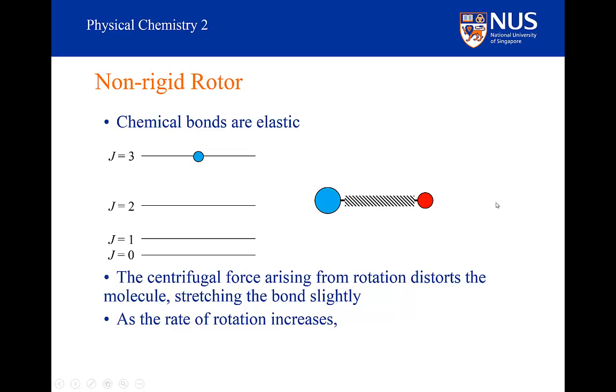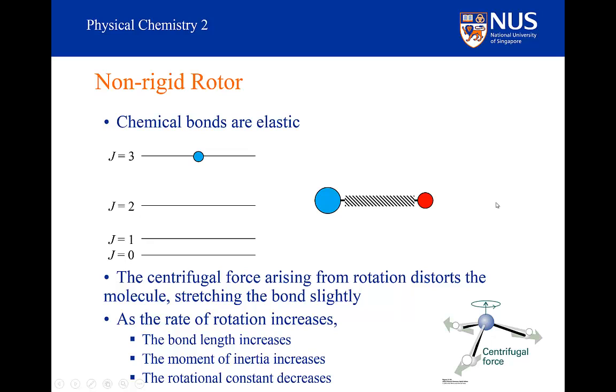As the rate of rotation increases, the bond length increases, the moment of inertia increases, and so the rotational constant decreases. And it doesn't just have to be a diatomic, it could also be a polyatomic. Here I have drawn ammonia, and if you rotate ammonia around its threefold axis...